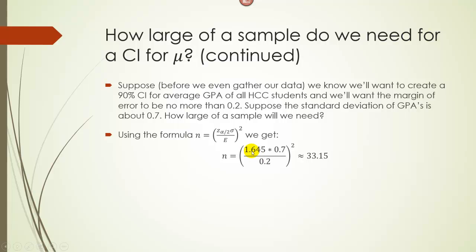So depending on the confidence level, but for 90% it's 1.645, multiply that by 0.7 our standard deviation, divide it by 0.2 our margin of error. When you're done with that, square the results, square everything, and we get approximately 33.15.